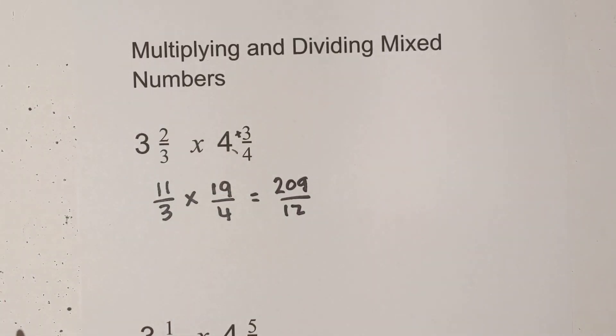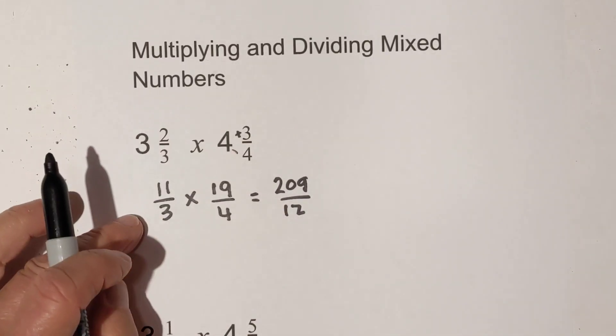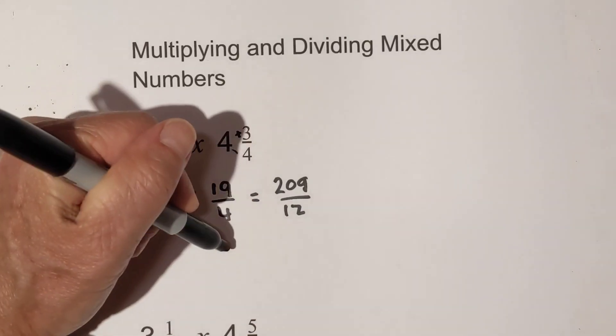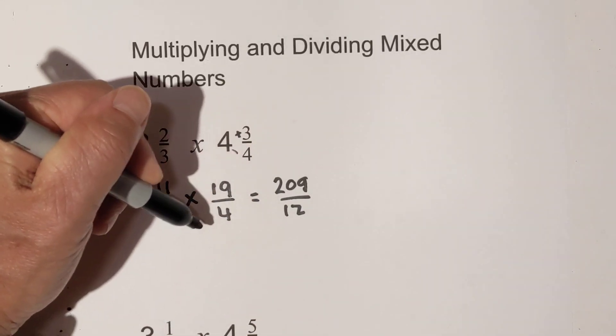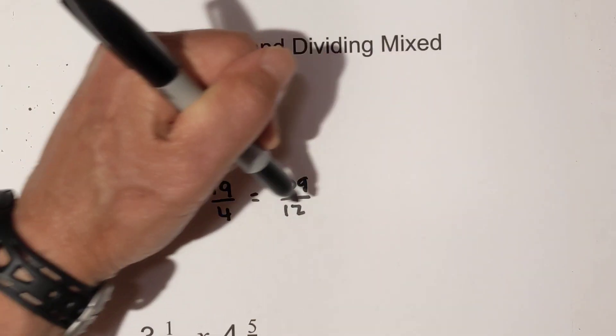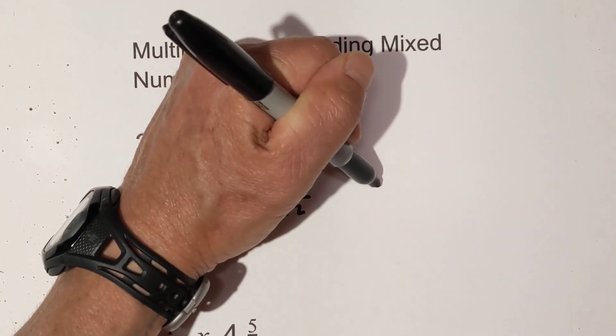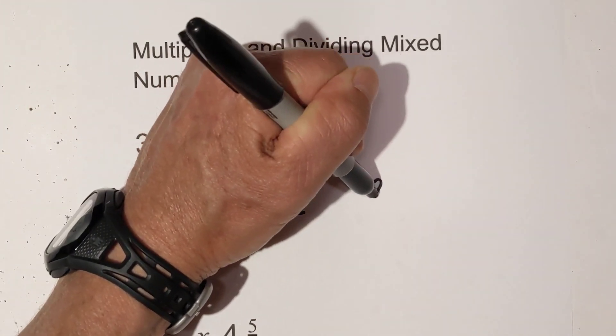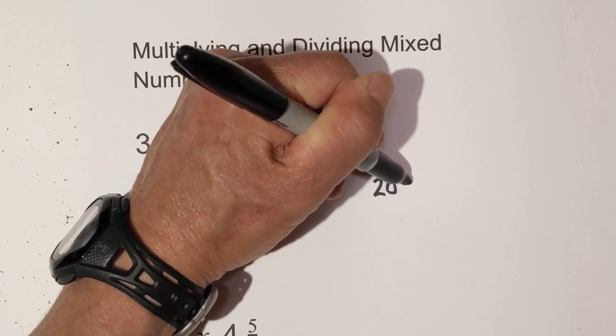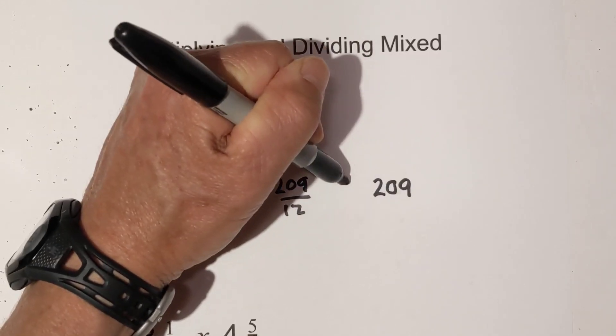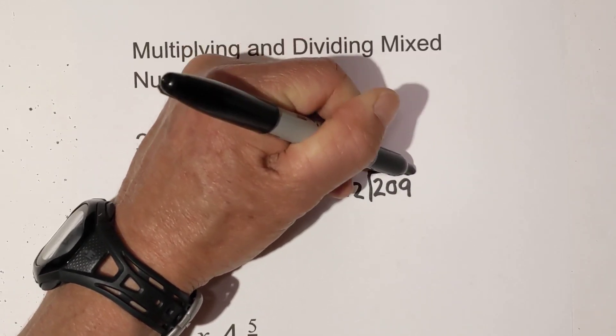Now we need to convert it back to a mixed number, so what we need to do is divide two hundred and nine by twelve.